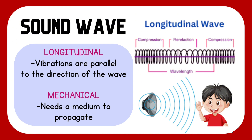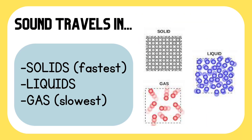On the other hand, rarefactions occur when particles are spread apart, creating regions of low pressure. The distance between one compression to the next compression, or one rarefaction to the next rarefaction, is called a wavelength. A sound wave travels or propagates on solids, liquids, and gas.